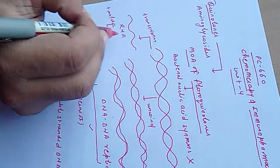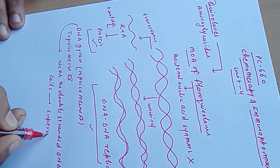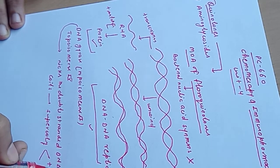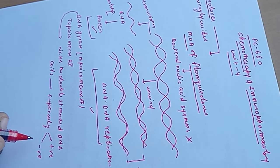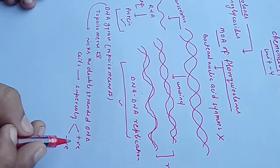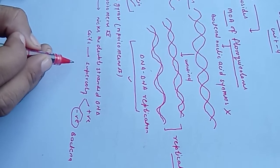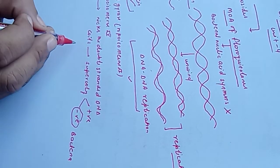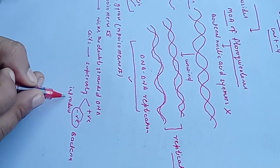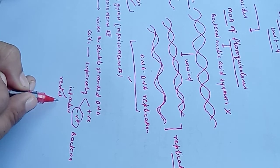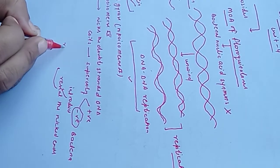After nicking the double-stranded DNA, coiling and supercoiling happen. In bacteria, there are two types of supercoiling — positive and negative. DNA gyrase particularly introduces negative supercoils, then reseals the nicked ends, and then replication happens.